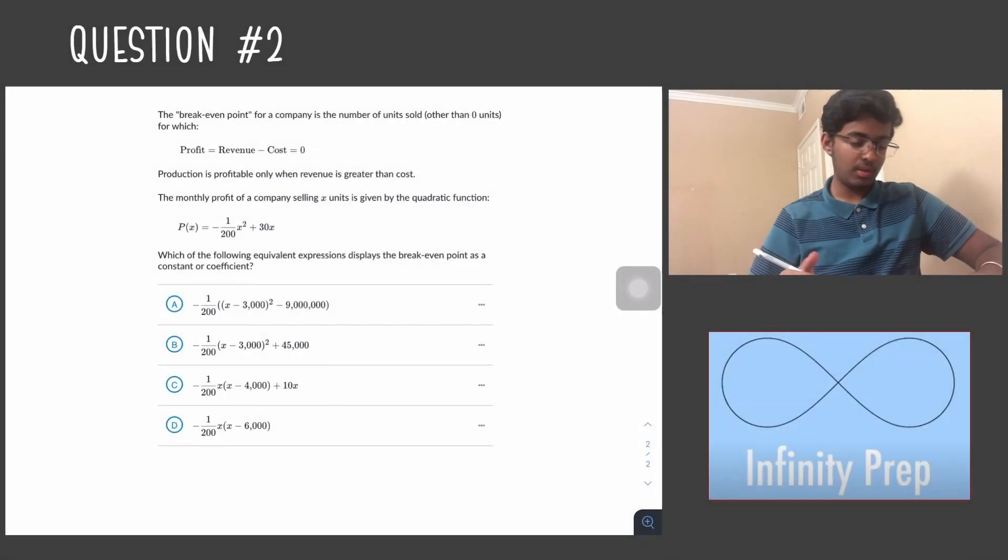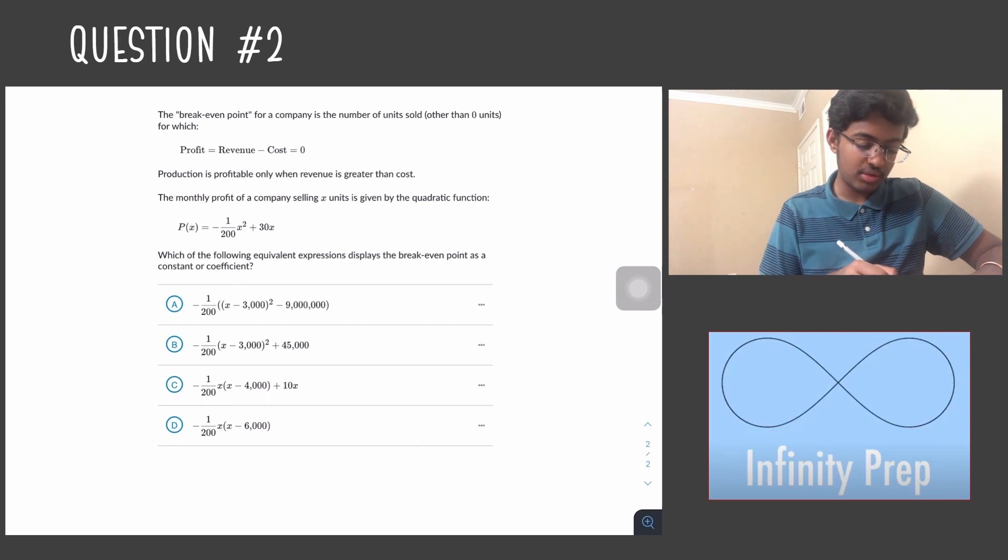Question number two: The break-even point for a company is the number of units sold other than zero units for which revenue minus costs equals zero. Production is profitable only when revenue is greater than cost. The monthly profit of a company selling x units is given by the quadratic function P(x) = -1/200x² + 30x. Which of the following equivalent expressions displays the breaking point as a constant or coefficient?